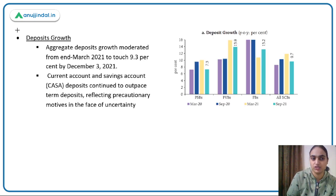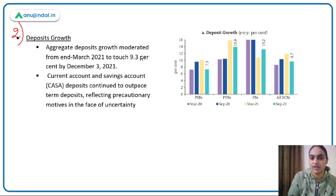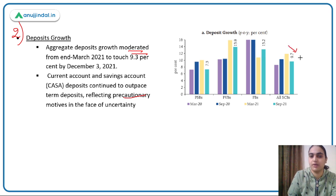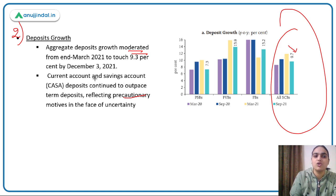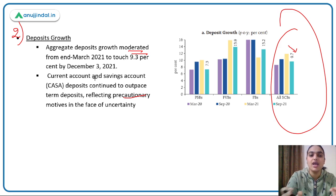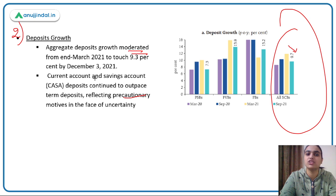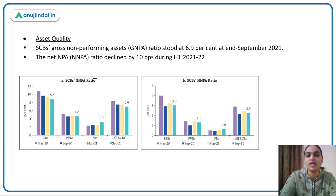On deposits growth: deposits growth has moderated. People started hoarding money as a precautionary motive, which is why deposits growth moderated. The increase in deposits that did happen was in current account and savings deposits — because it is easy to withdraw money from those accounts — since people are facing uncertainty and want money as a precautionary motive.